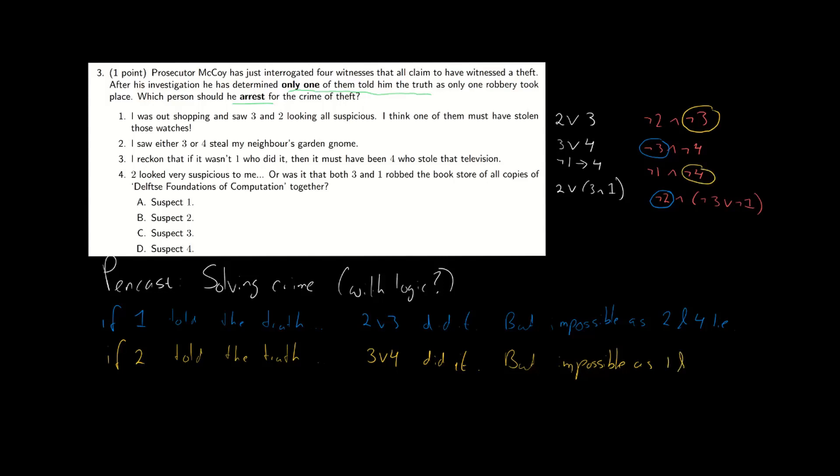Okay, so it's not one and it's not two who told the truth. What about number three? Could they be the person who is speaking the truth? Well, let's take a look. If number three is telling the truth, then not one implies four. In other words, one or four must have done it, right? Remember the equivalence of an implication.